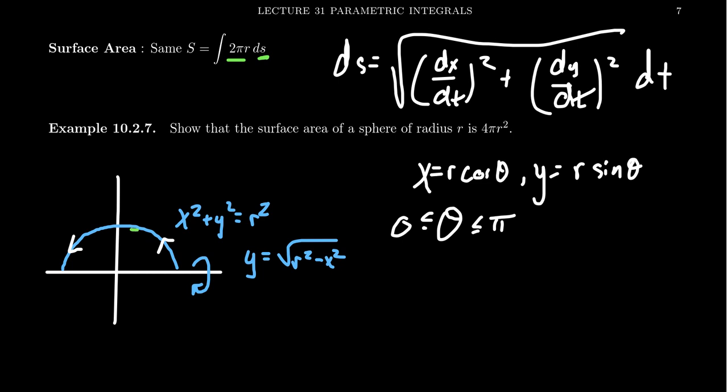And so the radius, as we rotate this thing around, think of a typical cross-section. The radius here will be the y-coordinate, which is given by this function right here.